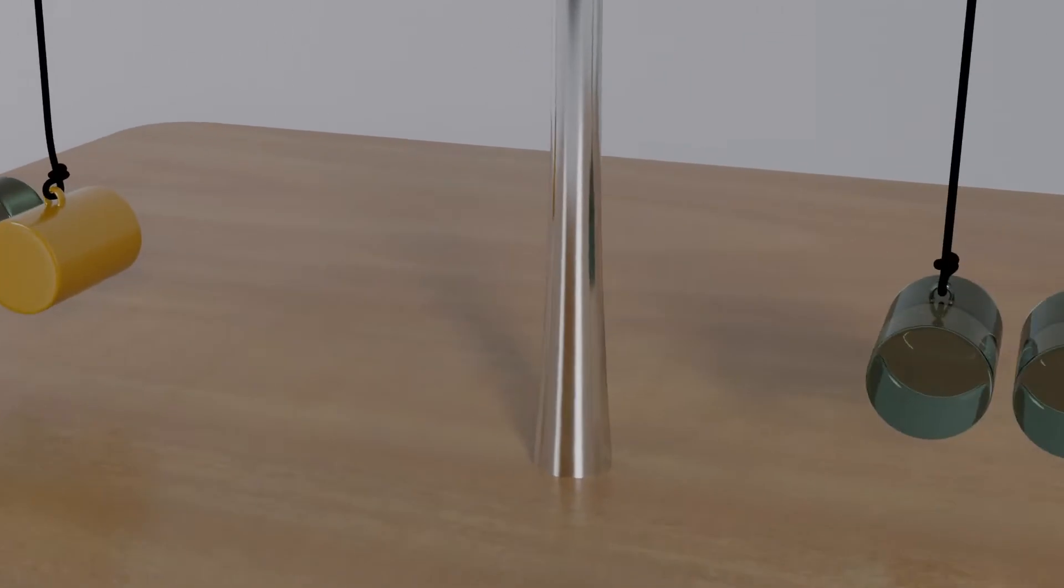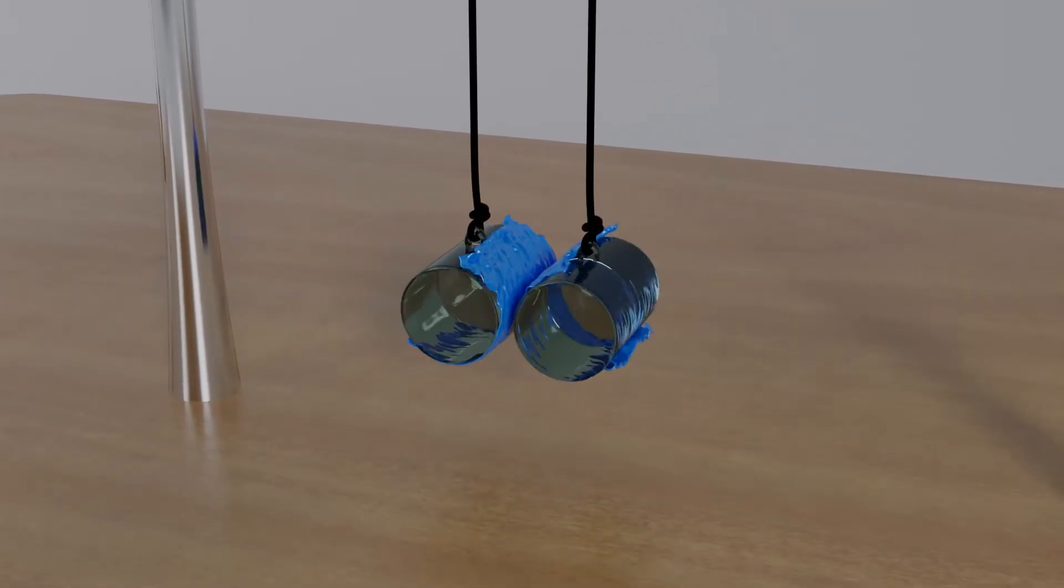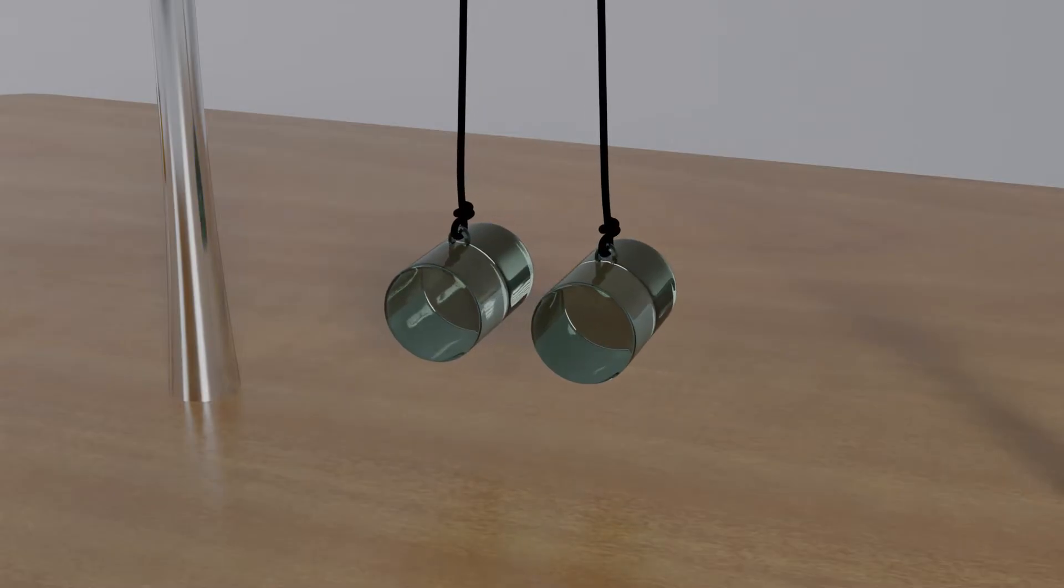But when we move towards the second setup, and in the same way, we rub the glass rods with silk cloth, then both the glass rods start moving away from each other. And here we experience the force of repulsion for the first time.